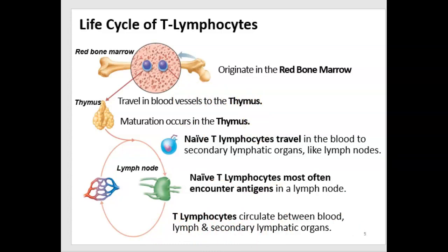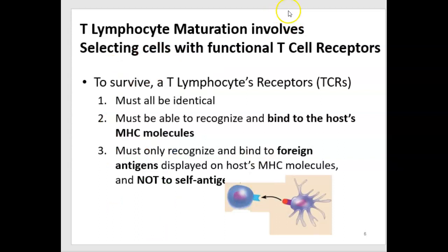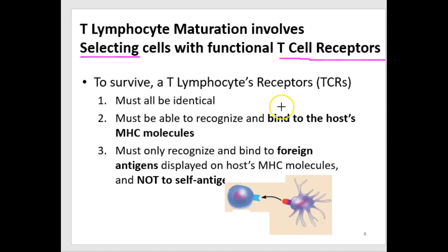Let's talk about how T lymphocytes mature — it's a process of selection, much like we saw with B lymphocytes. But here we're talking about T cell receptors, because that's what recognizes specific antigens. To survive, a T lymphocyte has to have receptors that are all identical — it doesn't just have one receptor on the surface; it will have many, and they all have to be identical.